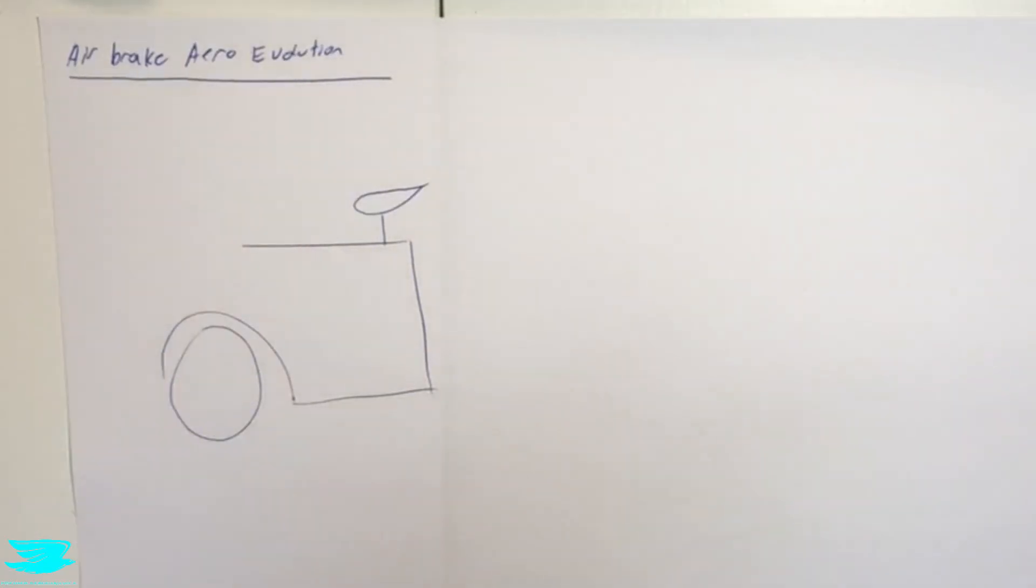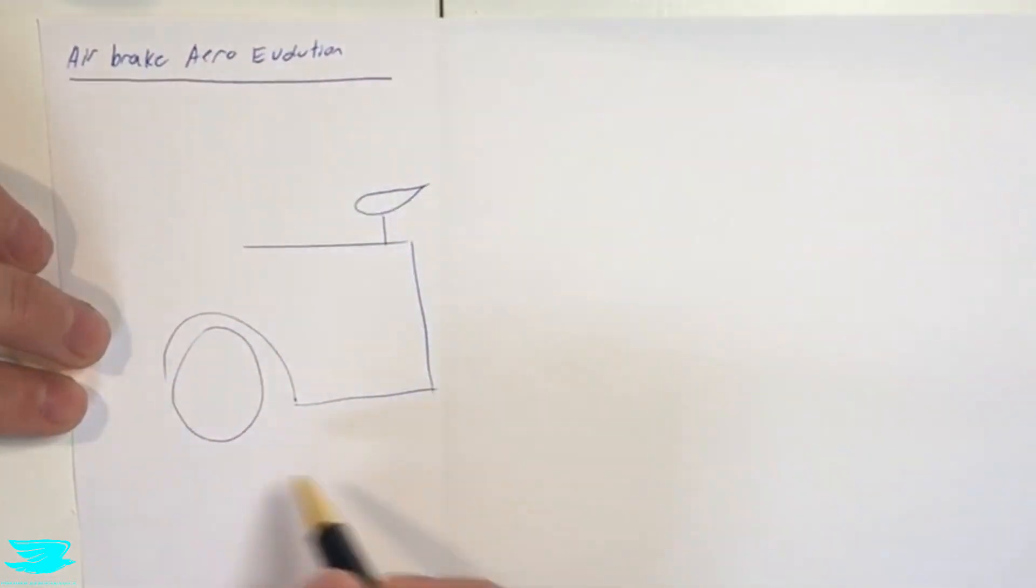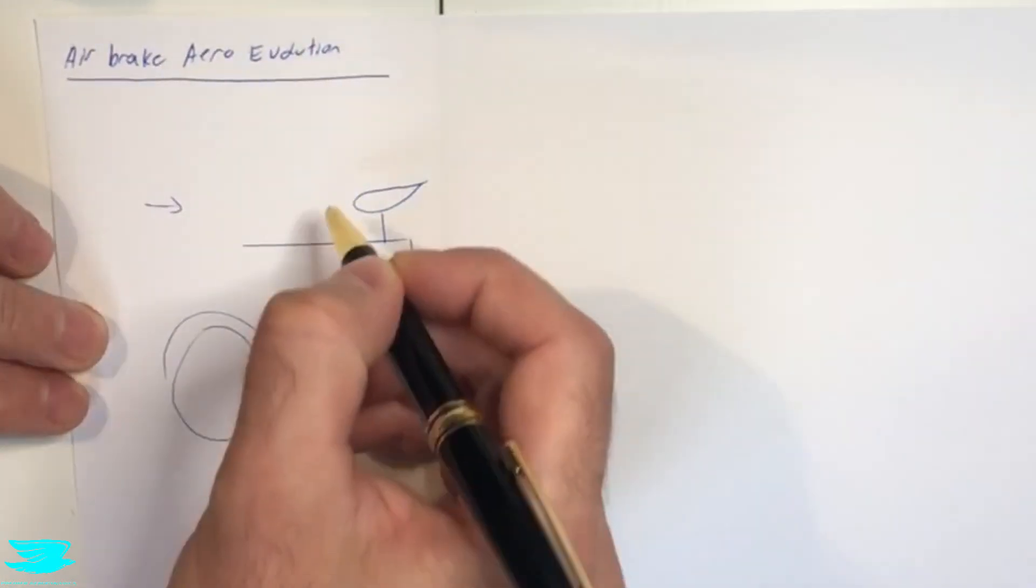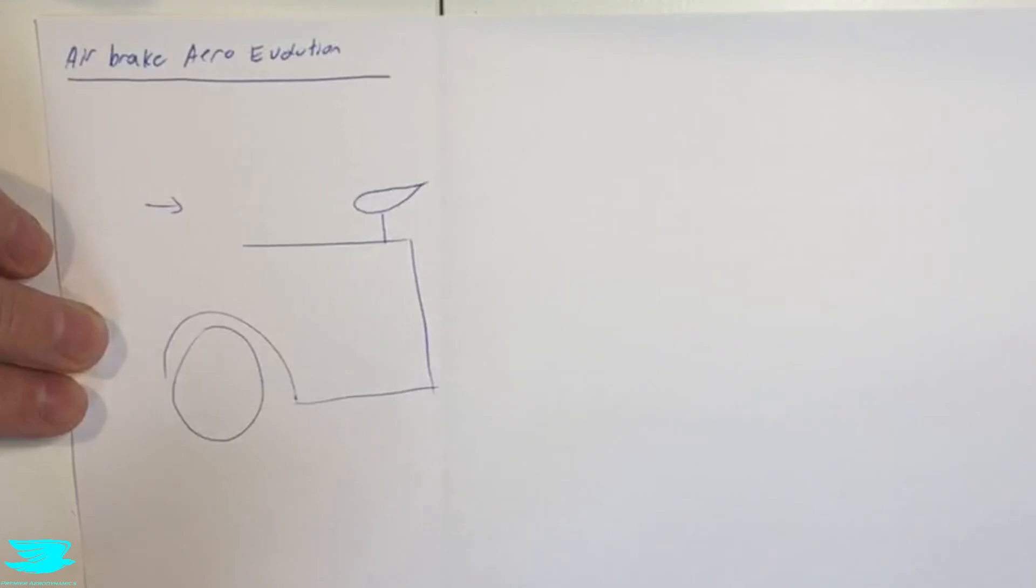So to begin with, the idea of an airbrake was that you already have a rear wing at the back of a car. I've just drawn a very simplified version here where you have the rear of the car, the wheel, and the flow coming in over the roof and then hitting the rear wing. And the rear wing produces a good amount of downforce.